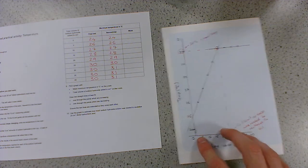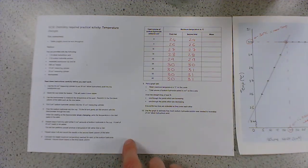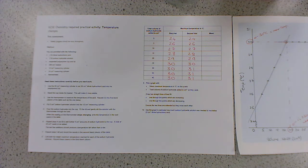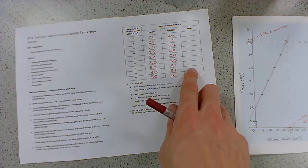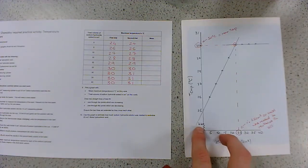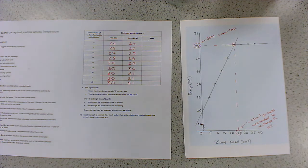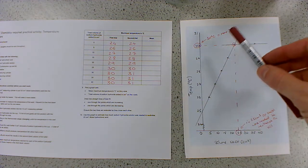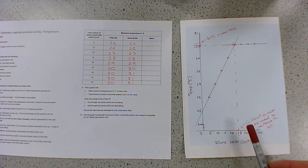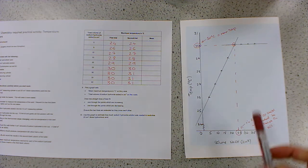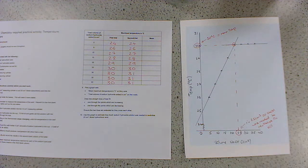So, just to reiterate, this worksheet here is attached on Show My Homework. You need to print it and fill it in, calculate the mean, and then I would like you to plot your own graph. It would be very similar to this, but obviously slightly different. Two lines of best fit, okay, and then extrapolate your two lines of best fit to work out the volume needed to neutralize and the maximum temperature.